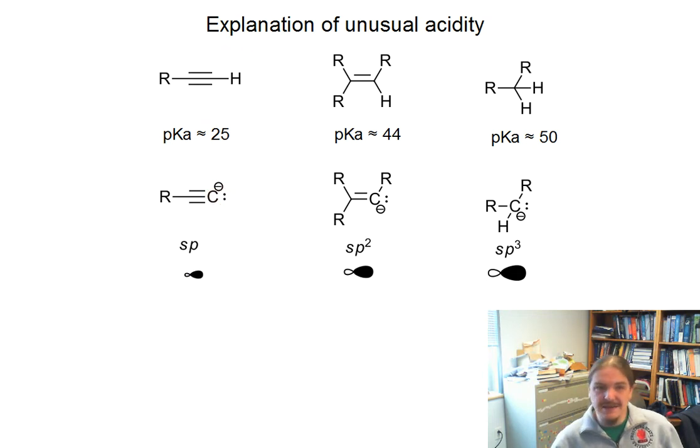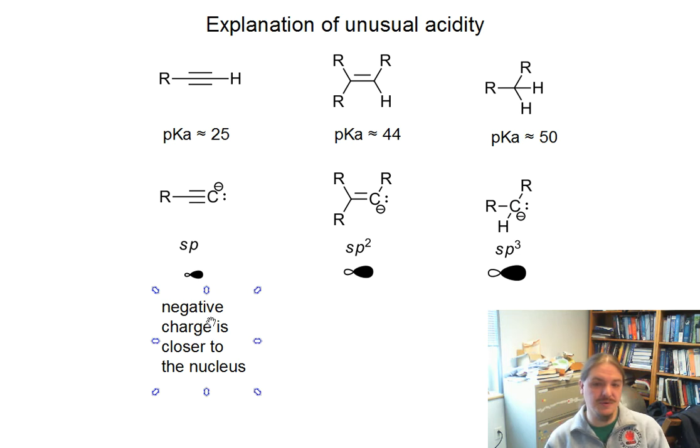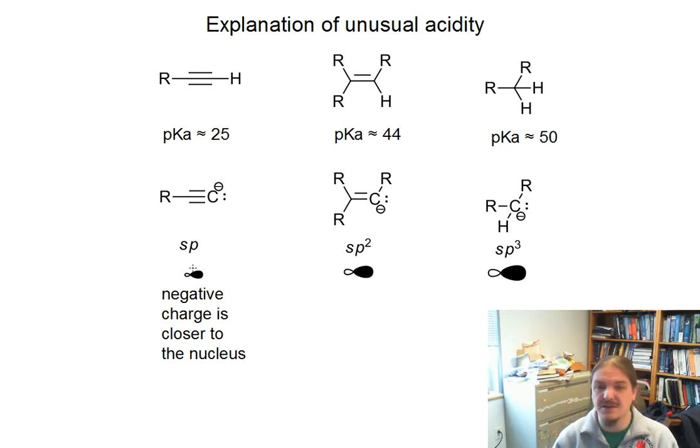So actually the big lobe on the sp orbital is a lot smaller. And that means that the negative charge is closer to the nucleus of this atom than it would be for the other two orbitals. And because the nucleus is positively charged, that sp orbital stabilizes the negative charge much more than it would for the other two atoms.